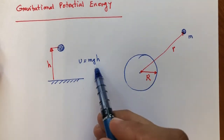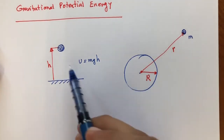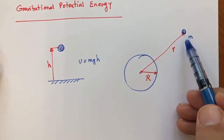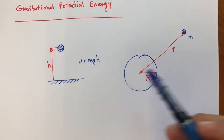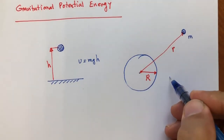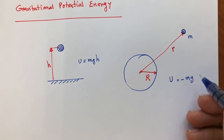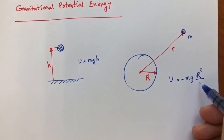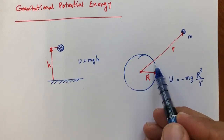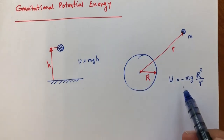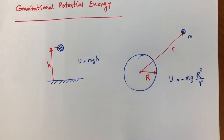In the MGH equation, g is constant when you are moving an object up and down slightly compared to the radius of the earth. But if your mass is far from the center of the earth compared to the radius, g is going to change. The potential energy for this case is going to be negative mg R squared divided by small r, where g is the gravitational acceleration on the surface of the earth, 9.81, R is the radius of the earth, and small r is the distance from the center of the earth.